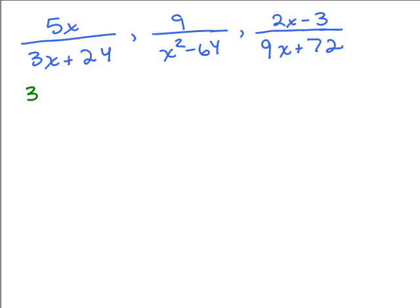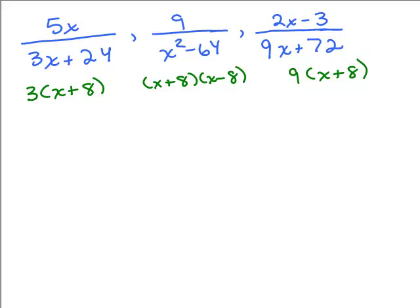Let's do one more. We start by factoring each denominator. The first is 3 times x plus 8. The second denominator is a difference of two squares: x plus 8 times x minus 8. And the third, you can take out a common factor of 9, leaving x plus 8. So let's see what we have for the least common denominator. Looking at the coefficients, I have a 3 and a 9. The least common multiple of 3 and 9 is just 9. I have x plus 8, and looking through all the denominators, there's no exponent on any x plus 8. The other kind of factor is x minus 8.